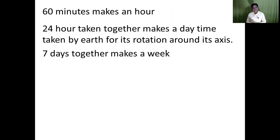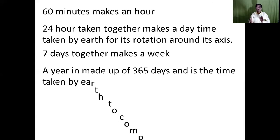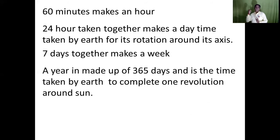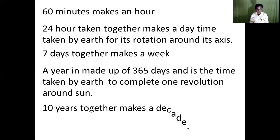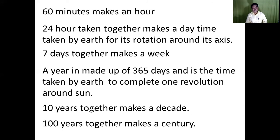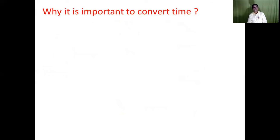When we take seven such days together it is known as a week. The time which the Earth takes for completing its one revolution around the sun is 365 days and is known as a year. The regular year is taken as 365 days and a leap year is of 366 days, and a leap year comes every four years. When we take 10 years together this time period is known as a decade, and when we take 100 years together it makes a century.